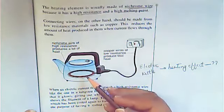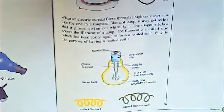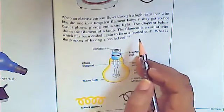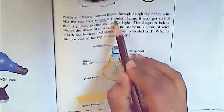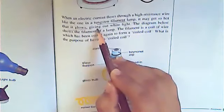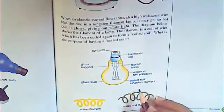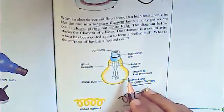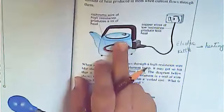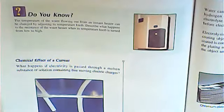Another figure: the bulb. The heating element in a bulb is tungsten filament. It may get so hot that it starts glowing, giving out white light. So the heating element in a bulb is tungsten filament, while the heating element in a kettle is nichrome wire.